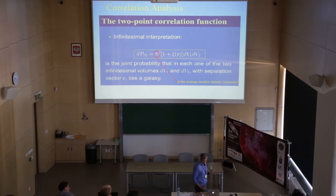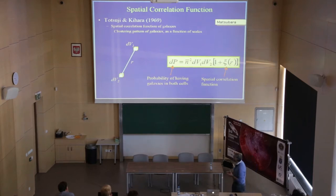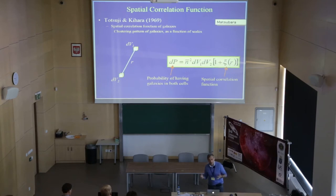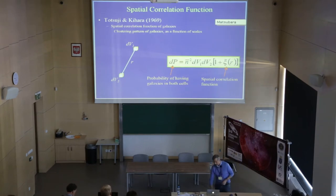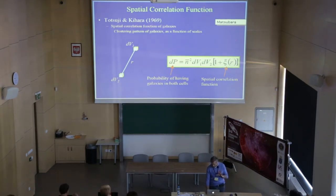This is the excess probability we are measuring. Another representation by Matsubara also references the first measurement of the galaxy two-point correlation function by Totsuhi and Kihara in 1969. You have the two volumes and the distance. If the process is isotropic and homogeneous, you can define this function as a function of the modulus of the distance - you don't need the full vector distance. This probability of having galaxies in both cells is a well-defined quantity that fits well with many cosmological theories.